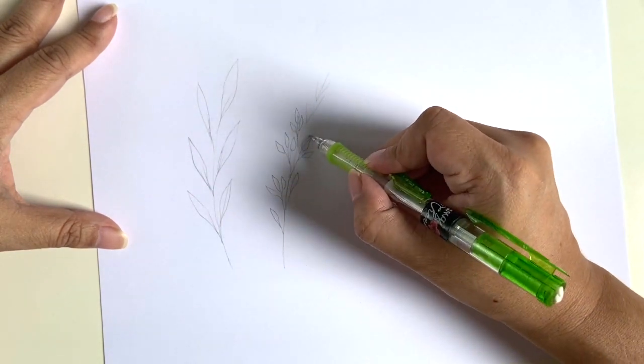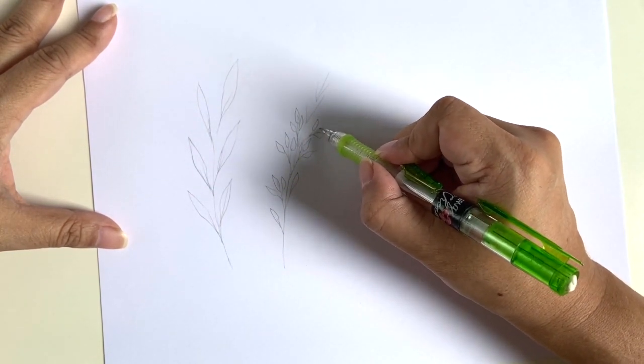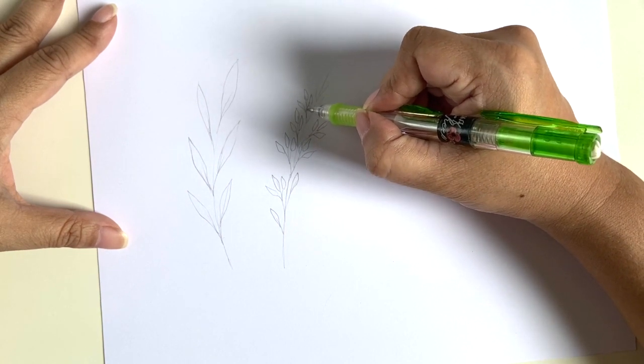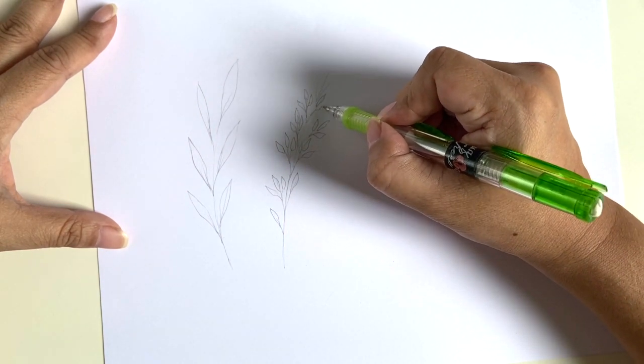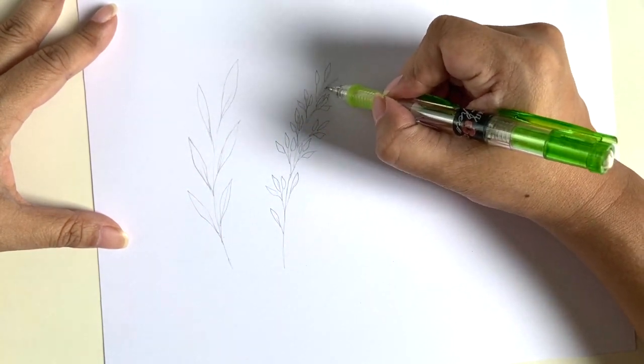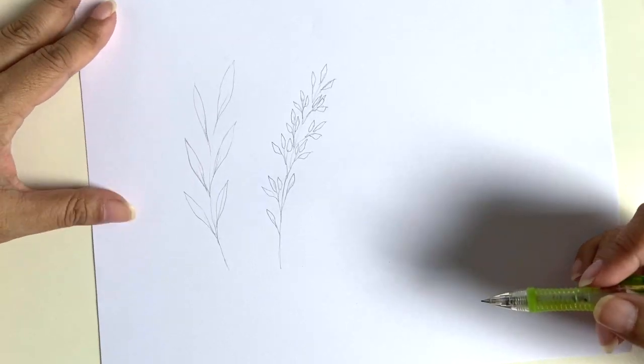I'll have stems and leaves that are front-facing and side-facing so it looks a little more realistic. Right now I'm just getting into the habit of making the leaf shapes so that when I work in ink I'm not going to be so rigid.